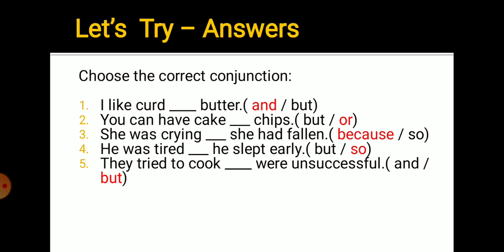So these are the answers. I like curd and butter - there's nothing like contrasting statements. You can have cake or chips - we're giving options or alternatives. She was crying because she had fallen - we're showing reason. He was tired so he slept early - again there's a reason. They tried to cook but were unsuccessful. Here there is contrast, and it's showing an outcome. These are the answers to those questions.